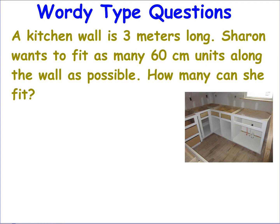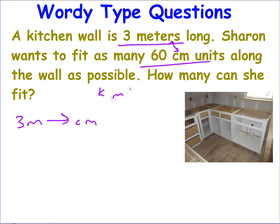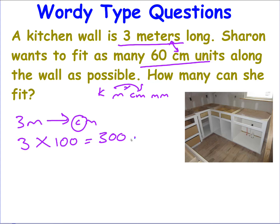Here's a word problem: a kitchen wall is three metres long. Sharon wants to fit as many 60 centimetre units along the wall as possible. How many can she fit? We need both measurements in the same units. Convert three metres to centimetres — big to small, multiply by 100 — giving 300 centimetres. Then 300 divided by 60 gives five units.